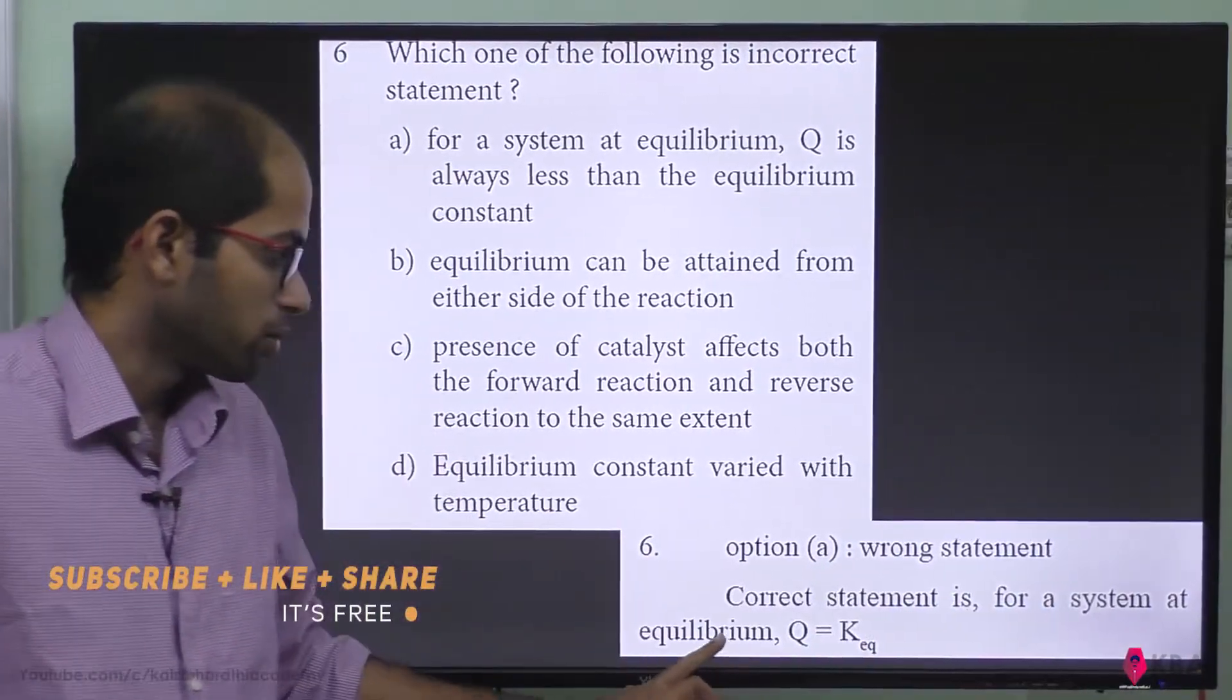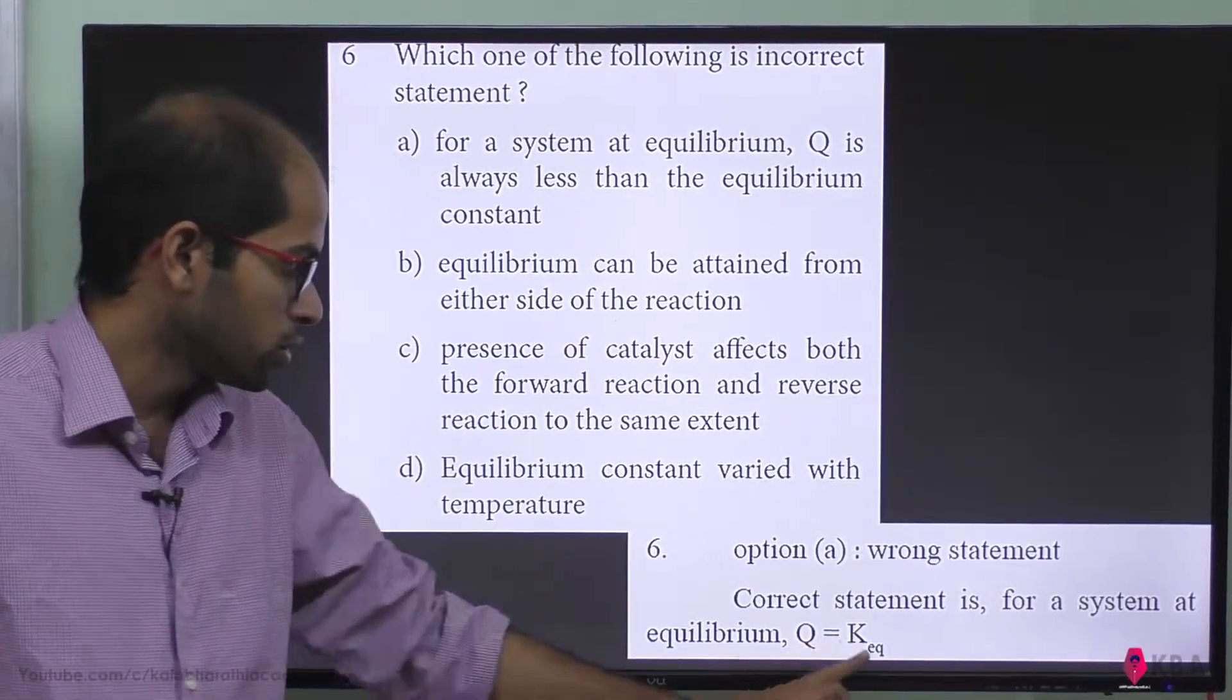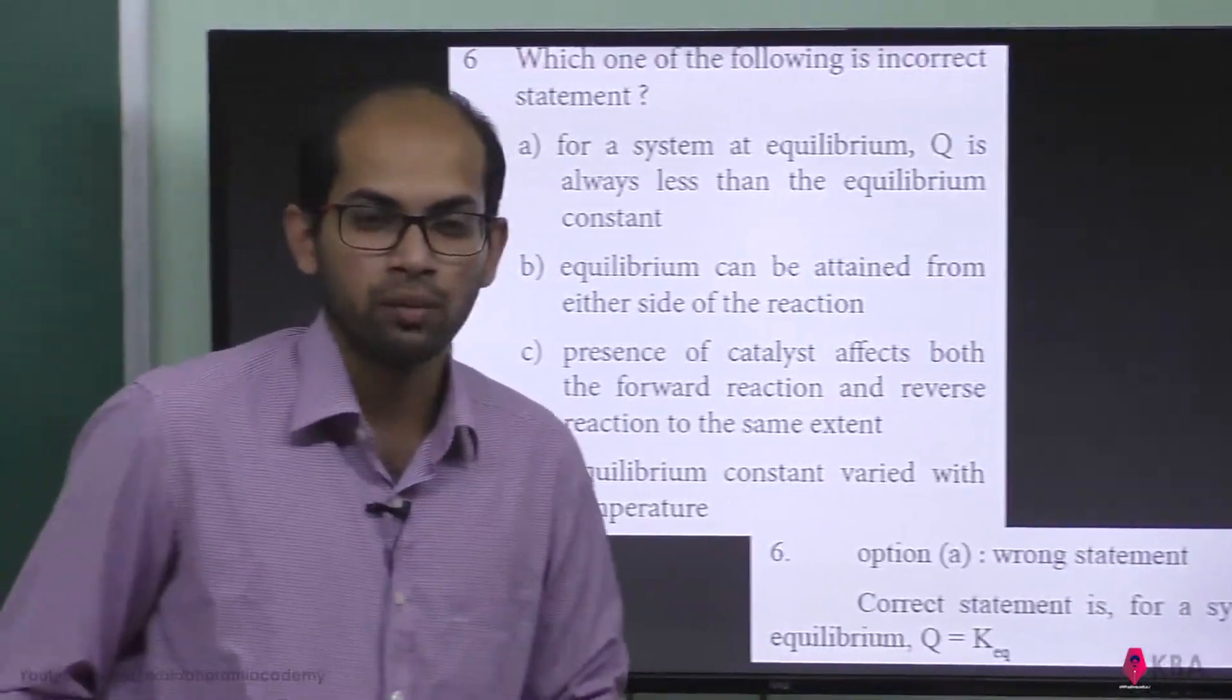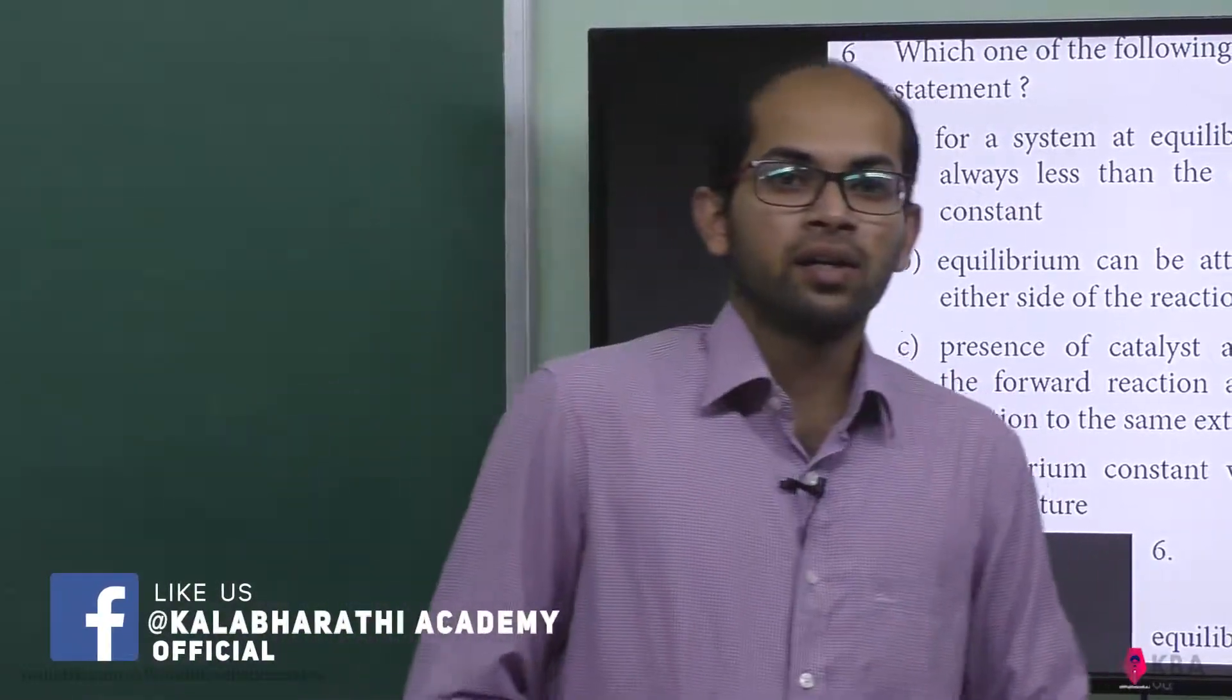The correct statement is: for a system at equilibrium, Q is equal to K equilibrium. Qc equals Kc. That is why the other statement is incorrect.